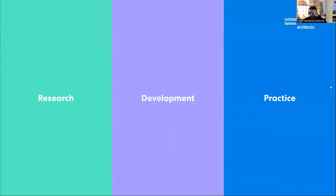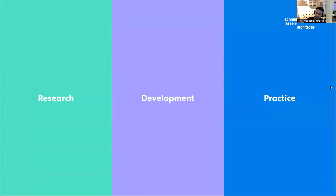Our work is divided into three buckets: research, development, and practice. Research is where we have all sorts of crazy ideas and experiments — things like artificial intelligence and LCA. Since we're only five, we have to decide what we really want to be involved in and what the firm needs right now. Then we take it to the development bucket, where we start building prototypes, small apps, and proof of concepts.